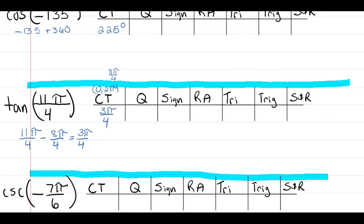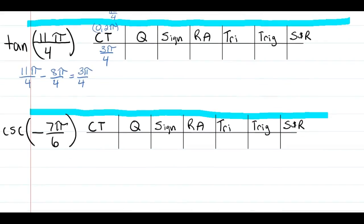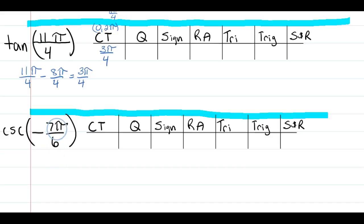Now try the fourth example: cosecant of negative 7π/6. Your first question is: what will we do to negative 7π/6 to get a coterminal angle between 0 and 2π? Your second question: what is that coterminal angle?